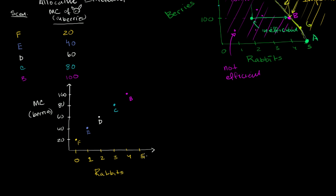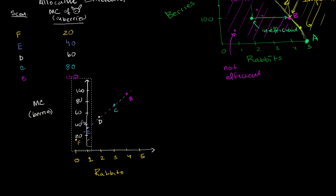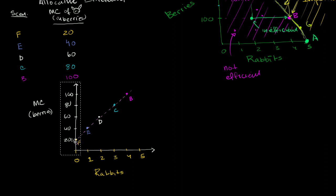So what I've just done is plotted the marginal cost — these are points on our marginal cost curve, as a function of the number of rabbits we have. Let me connect all the dots. In this scenario it just happened to be a line. It doesn't always have to be a line, but in many introductory economics courses it's often a line for simplicity. This is our marginal cost as a function of the number of rabbits we have.